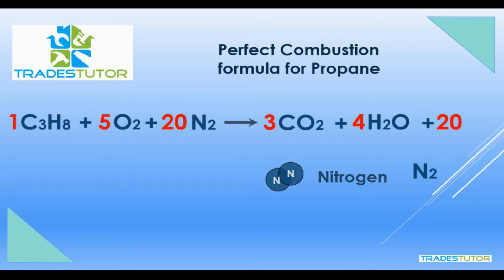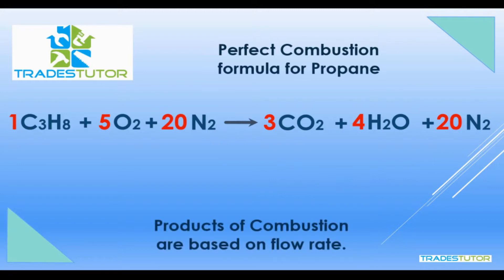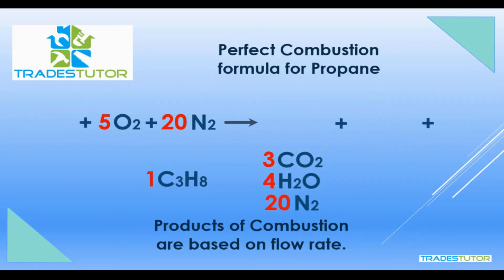So there's your formula. When we find the products of combustion, this is going to be based on flow rate, and that flow rate can be in cubic feet or cubic meters — for our purposes we'll deal with cubic feet. What we want to find out is: if we send a certain amount of propane in, how much of the products of combustion do we get on the other side? That relies on the ratio. For one C3H8 — one propane — you get three carbon dioxides, four water vapors, and 20 nitrogens. That's how you calculate what you get out the other side based on what you put in. We're always based on one, but we're going to have more than one cubic foot of flow rate, so we'll need to calculate that.